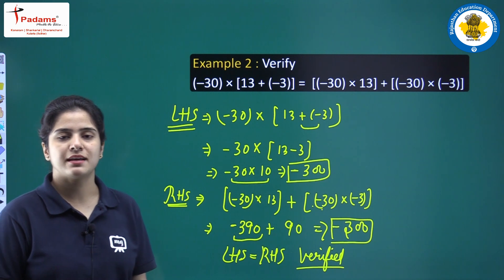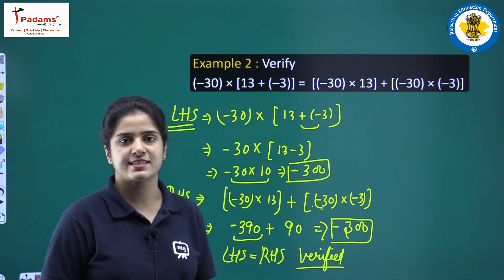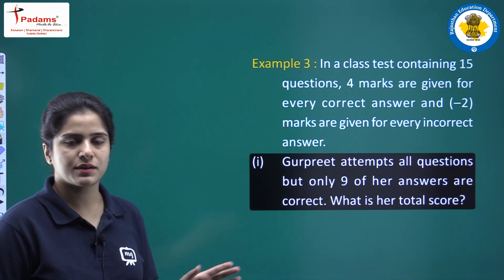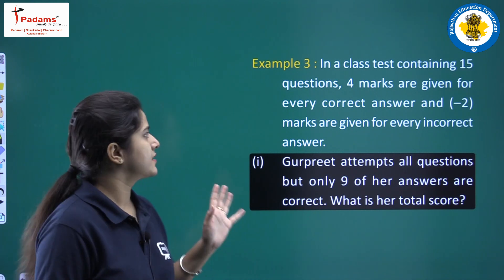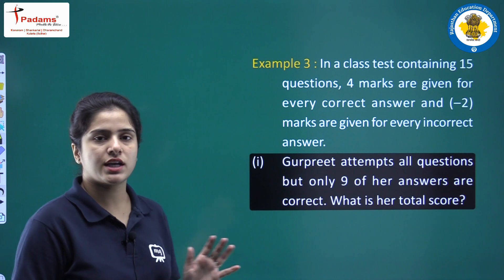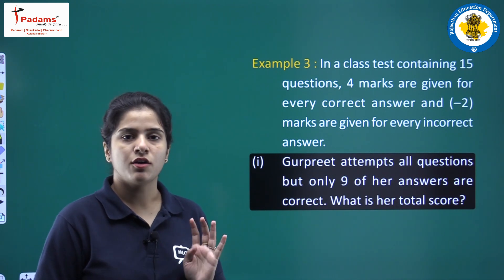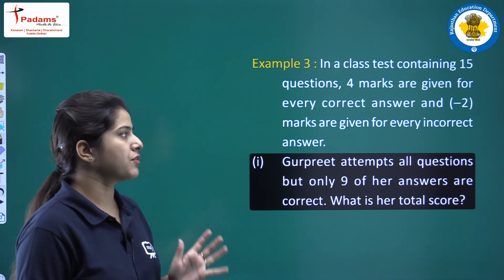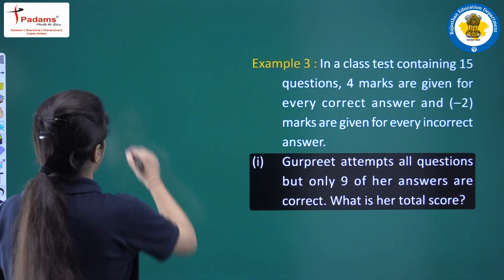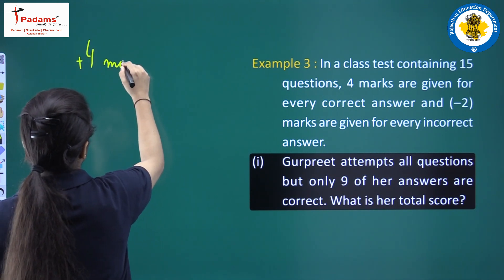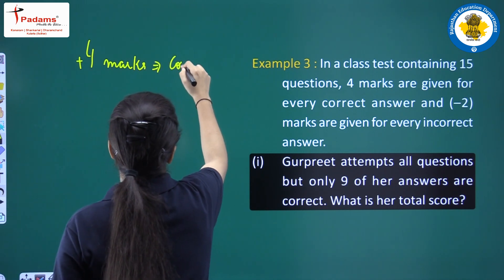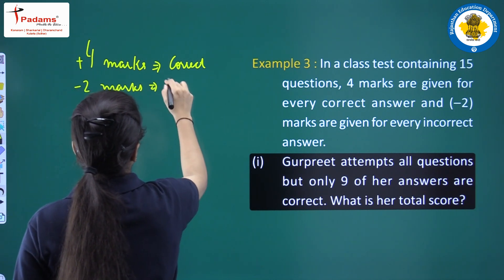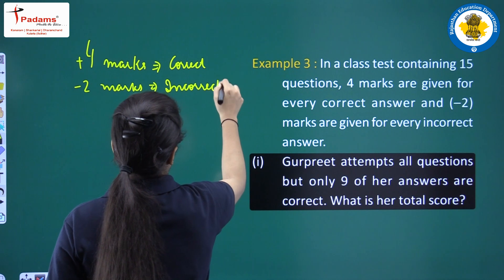This was all about example number 2. Let us move to the next example. In a class test containing 15 questions, 4 marks are given for every correct answer and minus 2 marks are given for every incorrect answer.